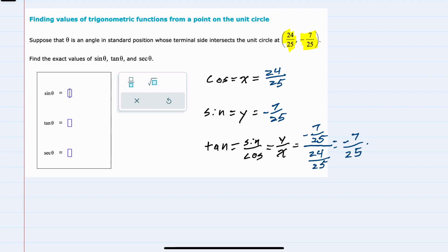I can put the y value negative 7/25 in the numerator and the x value 24/25 in the denominator. Dividing fractions is the same as multiplying by the reciprocal of that denominator. With the canceling, our tangent value is negative 7/24.